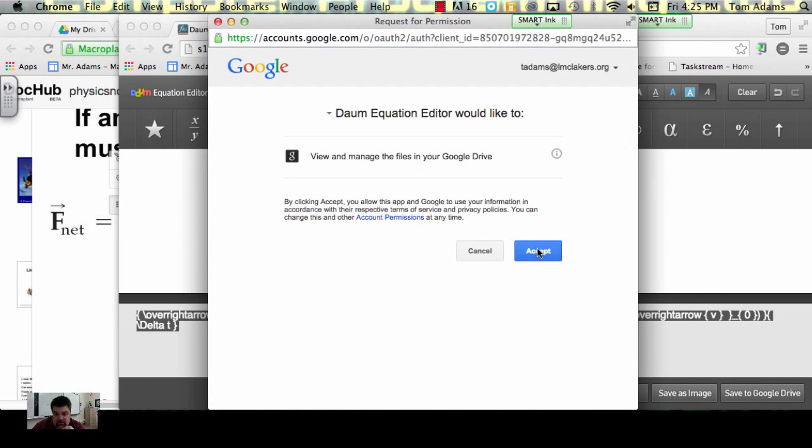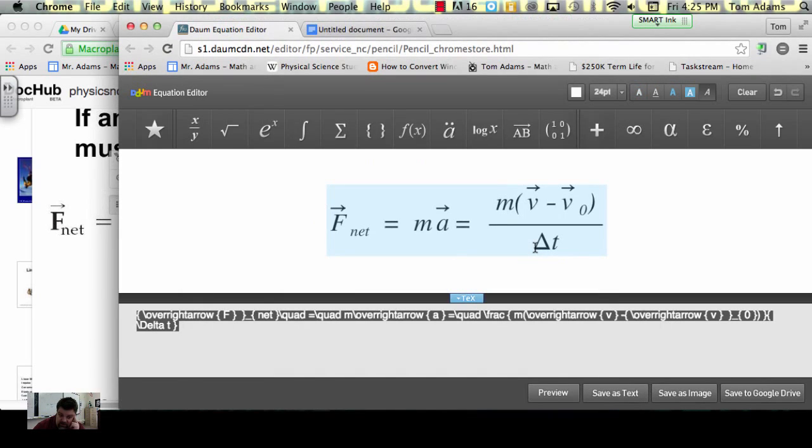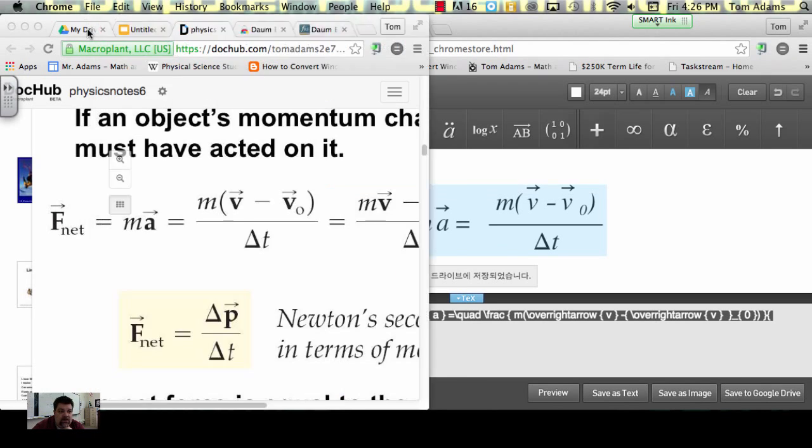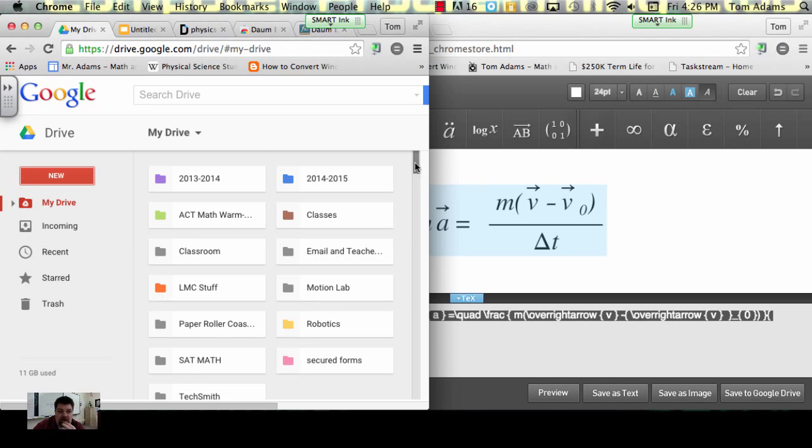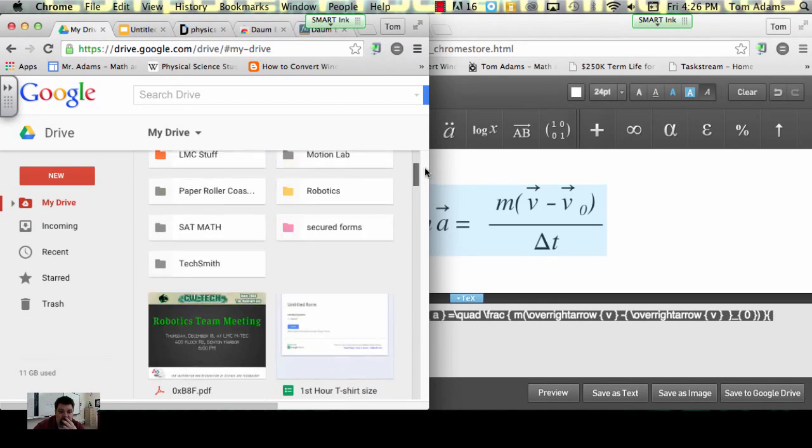And you'll get this too, the first time you run it. It will say, do you want permission to the Google Drive? And you say yes. And then when you save to your Google Drive, where will that save? Well, it's going to show up in your Google Drive somewhere in the main drive. It will be fairly new. And you'll see it in there.